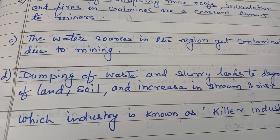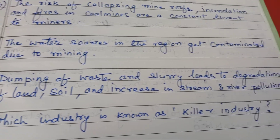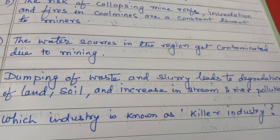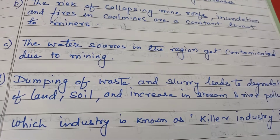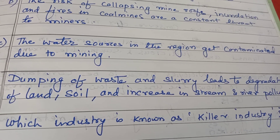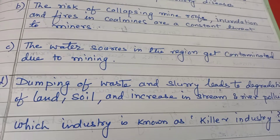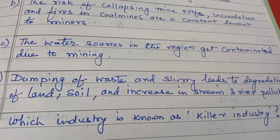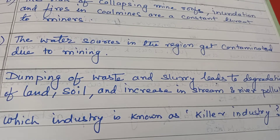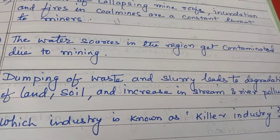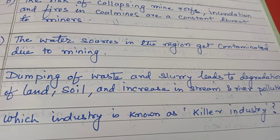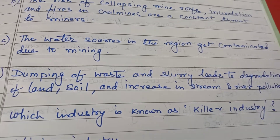Dumping of waste and slurry leads to degradation of land and soil, and causes stream and river pollution. Waste material, when dumped, degrades the land. Mineral mixed with water forms slurry, and when dumped in the area it creates water pollution in streams and rivers.